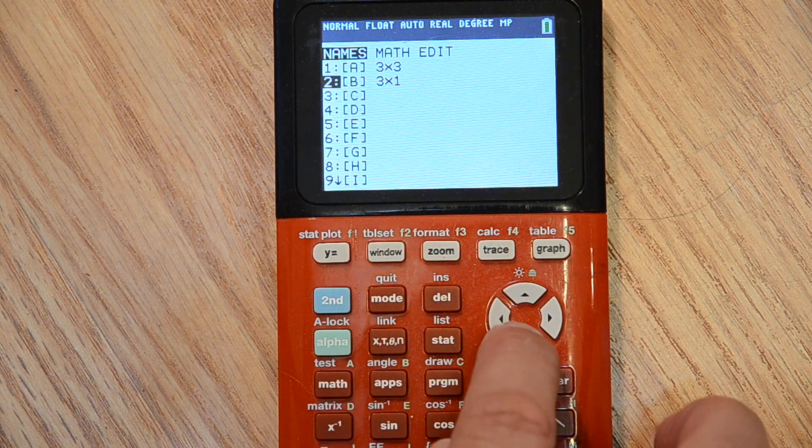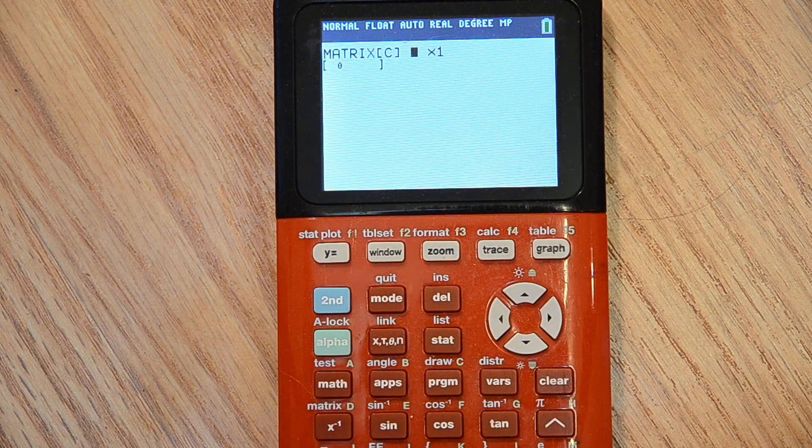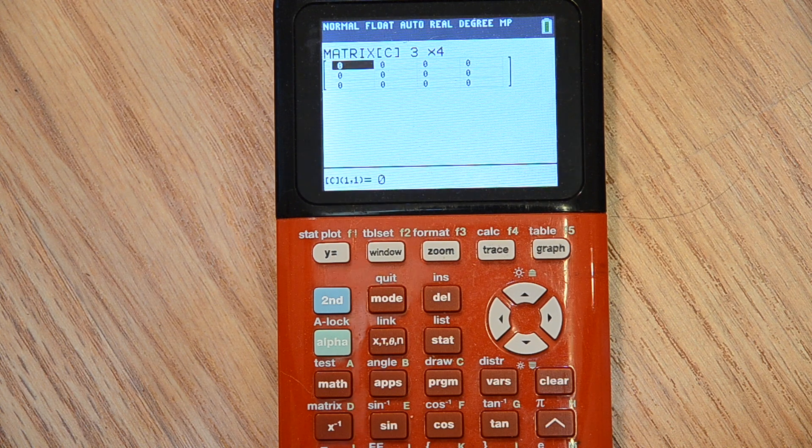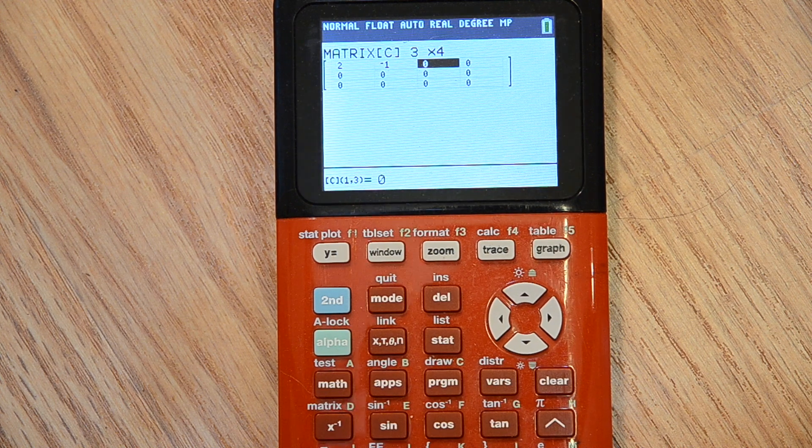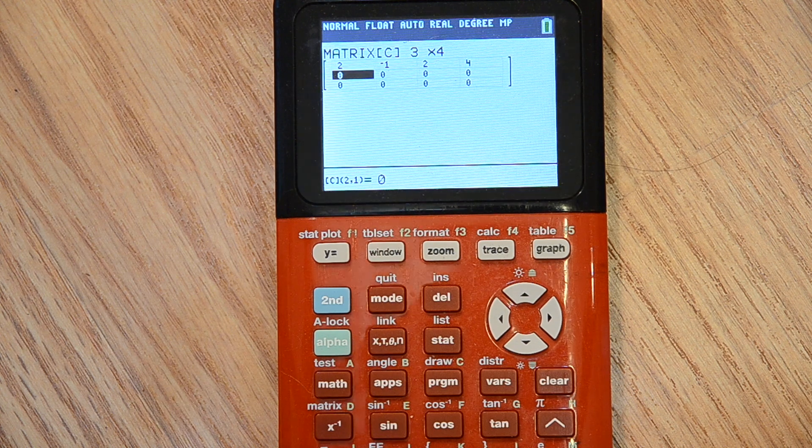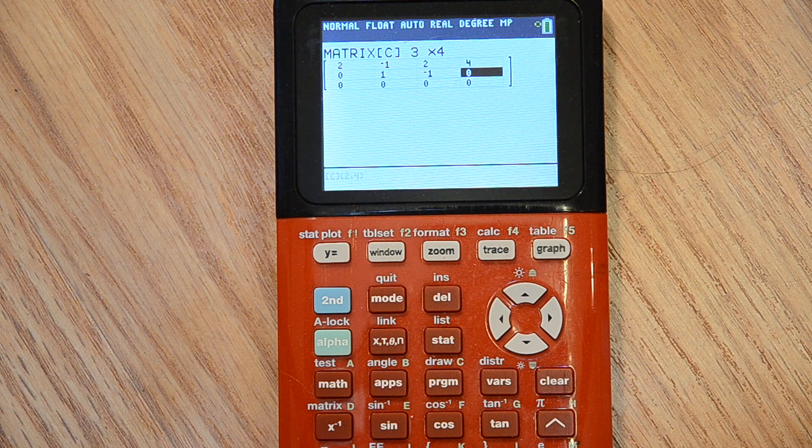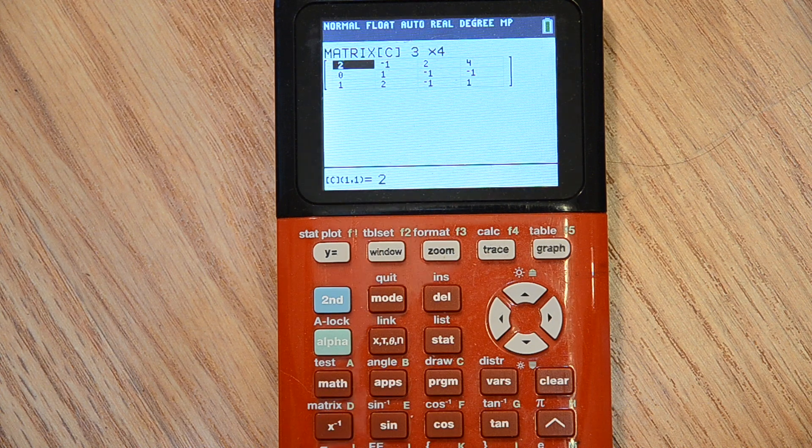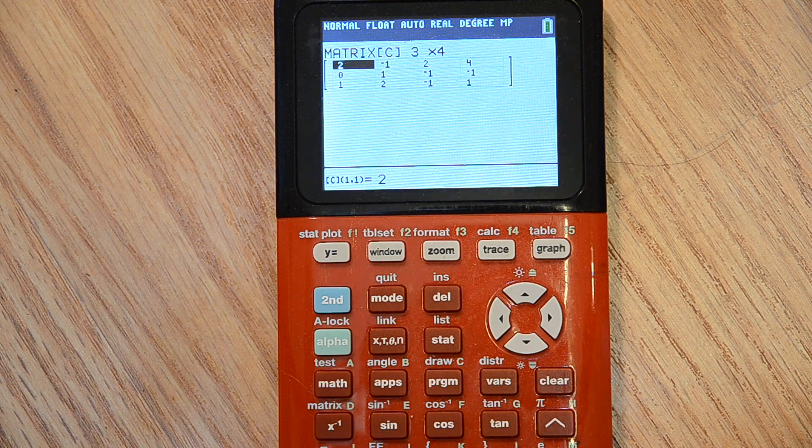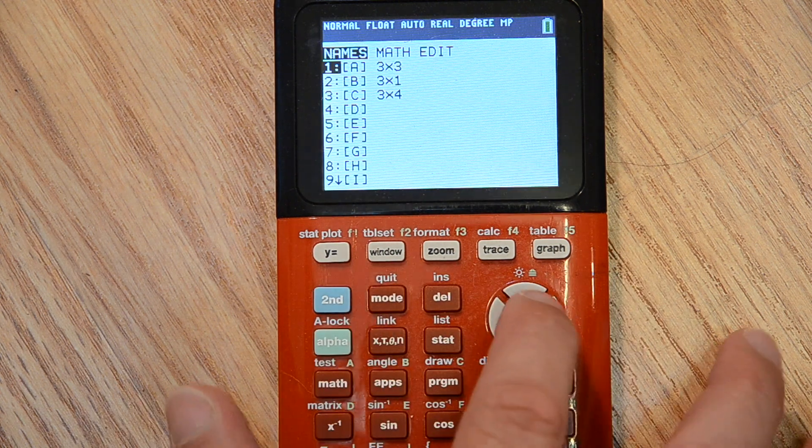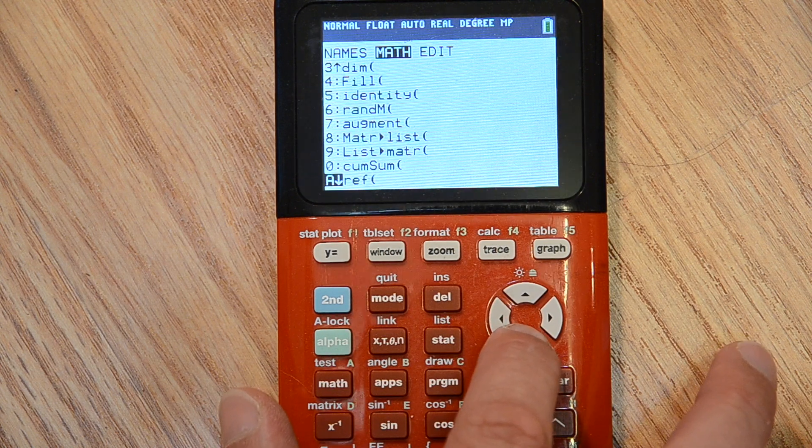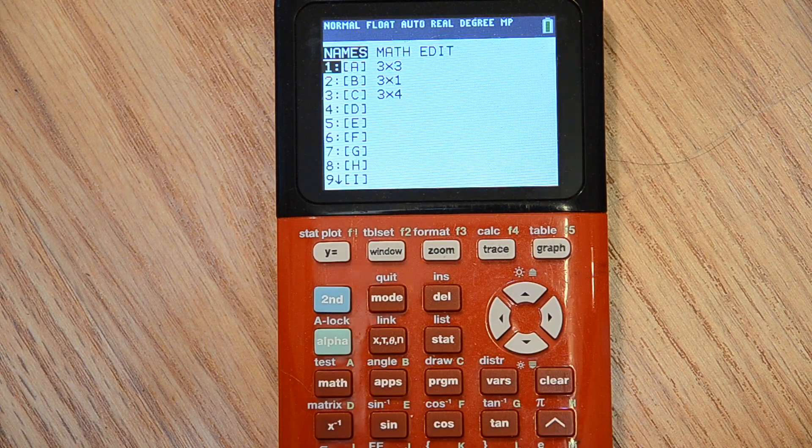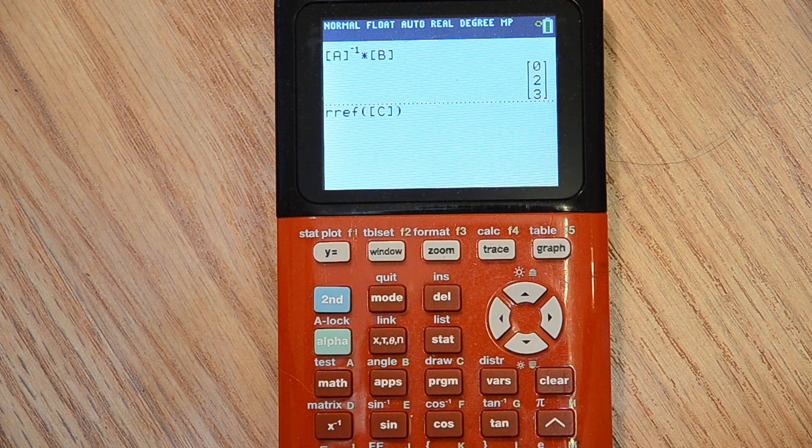Or, I can go second matrix, let's do matrix C, and edit that. We are going to set up a three row, four column matrix. Now this time I am going to include the constants at the end, so we have two, negative one, two, and four, zero, one, negative one, and negative one, and one, two, negative one, and one. Now, another alternative way again, finding alpha, beta, K, is to quit this, go into the matrix menu, do math, and you want a reduced row echelon form with matrix C. And there you go.